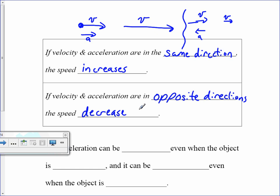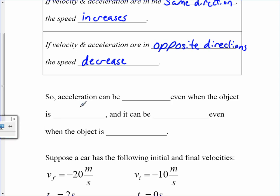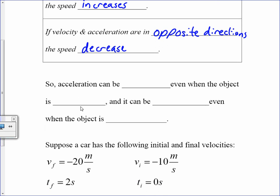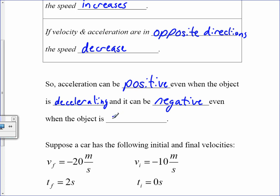However, if I throw something up into the air, as it moves up it slows down. That's because the velocity is pointing up and the acceleration is downward, so that acceleration is causing the object to slow down. Acceleration can be positive even when the object is decelerating or slowing down, and it can be negative even when the object is speeding up. Don't get confused by the signs — they simply denote a direction, not necessarily whether the object is speeding up or slowing down.